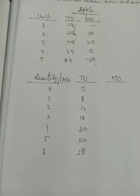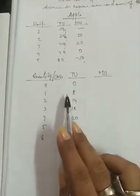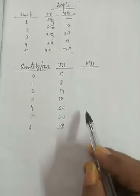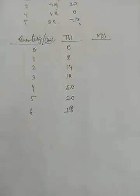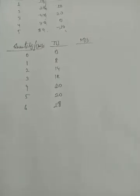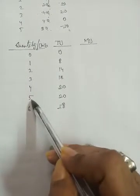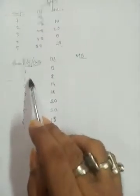Here we will discuss the law of diminishing marginal utility using this table. In the table, the quantity — that means units — is 0, 1, 2, 3, 4, 5, and 6. So there are 6 commodities, meaning 6 goods we have taken, starting from 0.